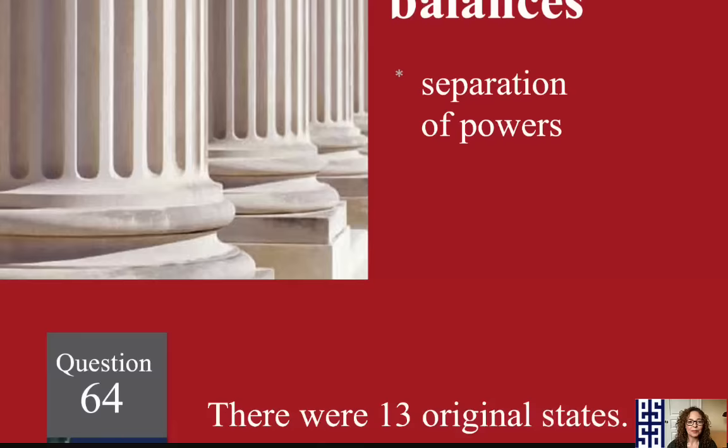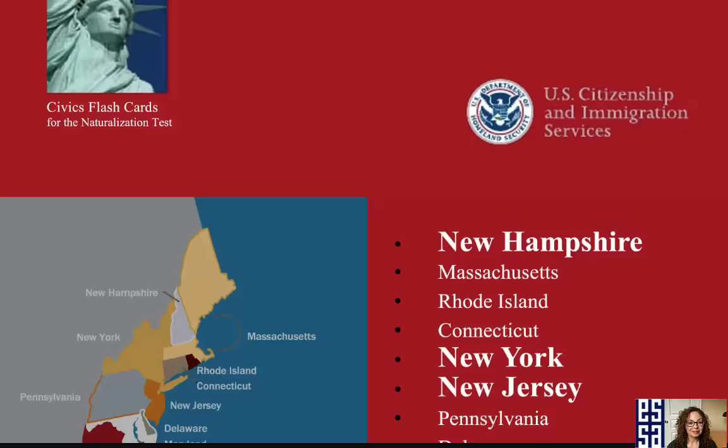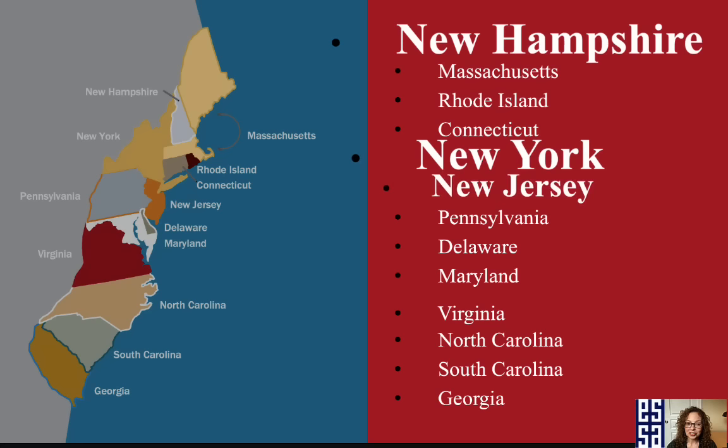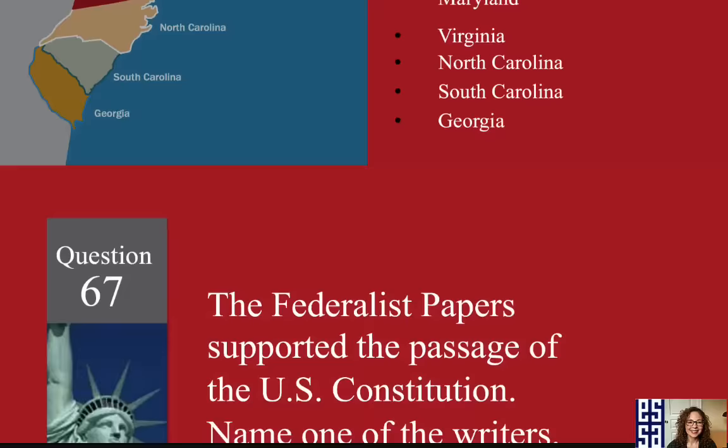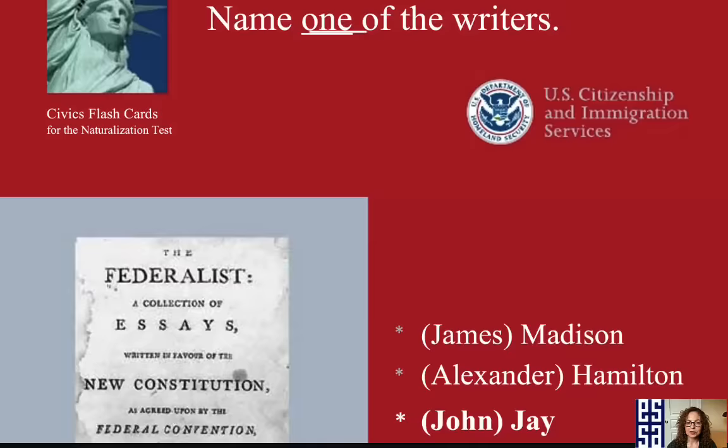There were 13 original states. Name three. New Hampshire, New York, New Jersey. The Federalist Papers supported the passage of the U.S. Constitution. Name one of the writers. John Jay.